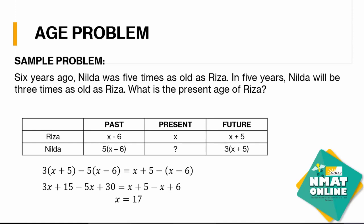Let's have a sample age word problem. 'Six years ago, Nilda was five times as old as Riza. In five years, Nilda will be three times as old as Riza. What is the present age of Riza?' To better solve this type of problem, I suggest putting it in a tabular form so you can organize it properly. When you apply the specifications in the problem, you won't get lost since you can see it in your table.